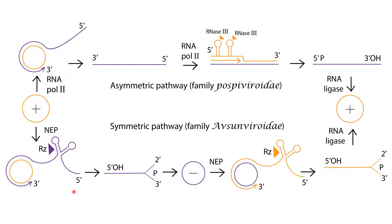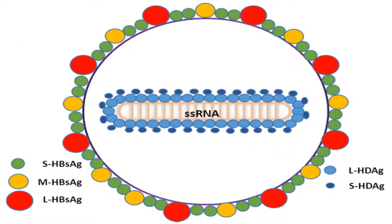In symmetric replication, the circular positive RNA is transcribed into a linear concatemeric negative strand RNA. Instead of serving as a direct template for synthesis of linear concatemeric positive strand RNA, the concatemeric negative strand RNA is cleaved into unit-length molecules, followed by circularization. The circular negative RNA then serves as a template for synthesis of linear concatemeric positive strand RNA, which is subsequently cleaved into unit-length monomers and circularized.